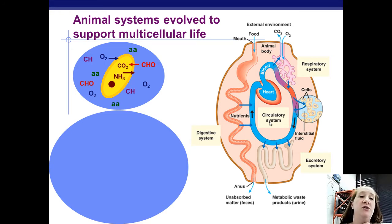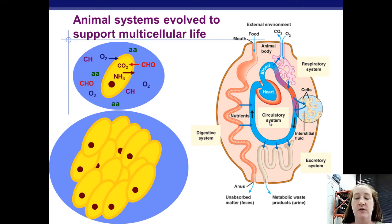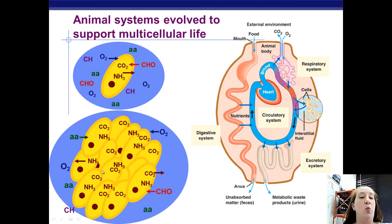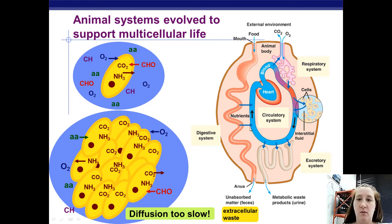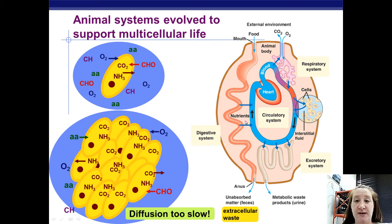You are a multicellular creature, so you've got to be able to function as one. You cannot simply diffuse materials in and out of each cell — to get from cell to cell to cell would take way too long to get good stuff in or bad stuff out. Diffusion is too slow for a multicellular system. You need different systems to move materials around, and the circulatory system moves everything around, taking in nutrients from your digestive system and helping get rid of metabolic waste.